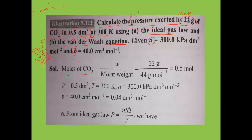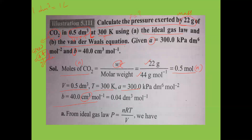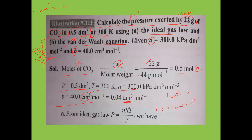From ideal gas equation: P = nRT/V. With n=0.5 mol, R=8.314 J, T=300 K, V=0.5 dm³, we get pressure in Pascals, then convert to kilopascals. From Van der Waals equation: P = nRT/(V − nB) − an²/V². On substituting all values, we get approximately 2.3 × 10³ kPa for real gas.